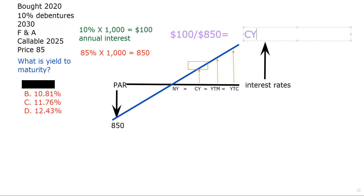Let me grab my calculator. Okay, so $100 divided by $850 — that is definitely something I should be able to do. And I get 11.76% as our current yield. Let's put that in there.